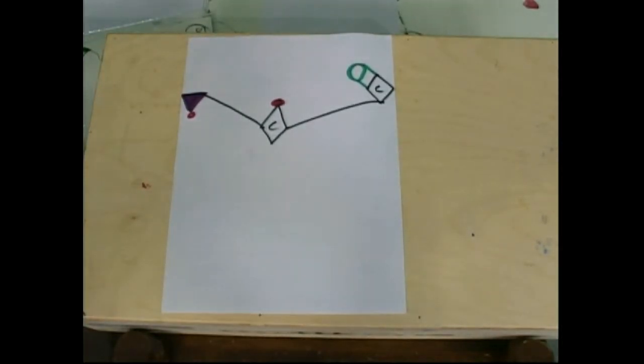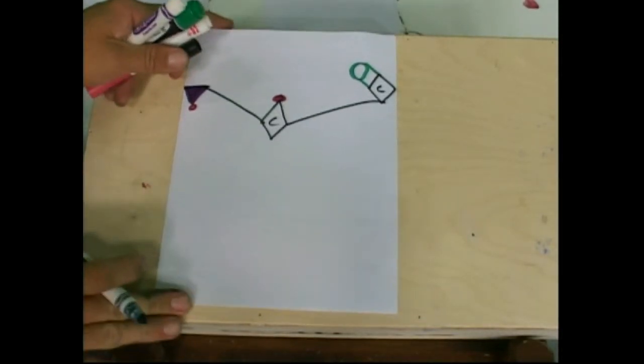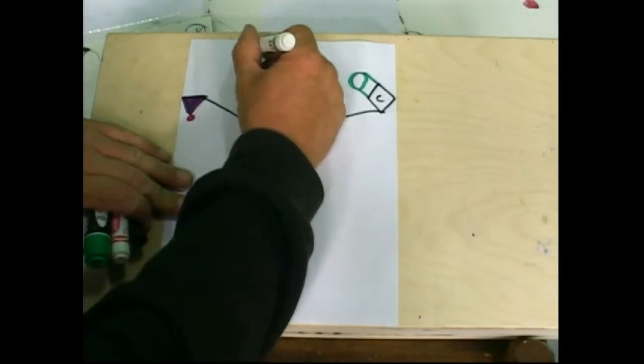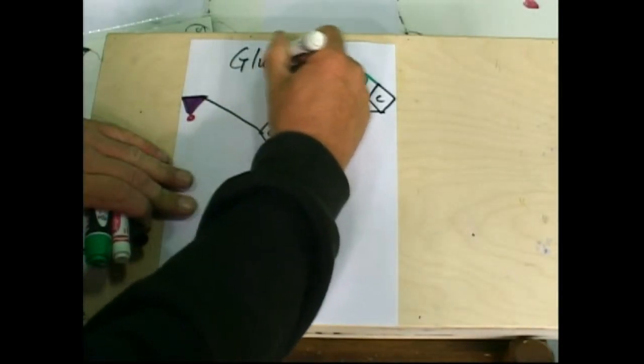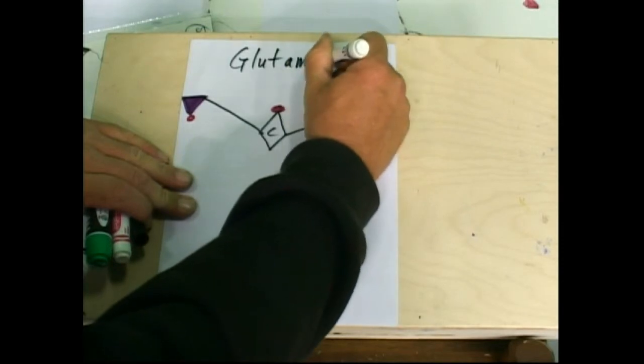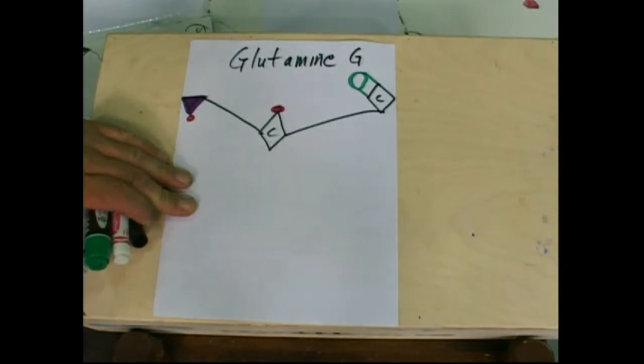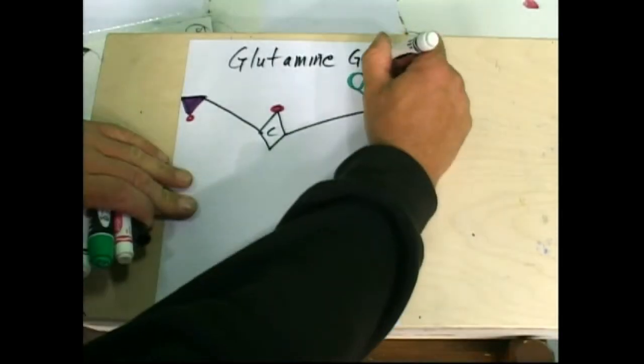What this one is, is glutamine. Now, they all have glute, they all have -ine-like endings, right? But glutamine. What's the three-letter symbol for glutamine? It's GLN.